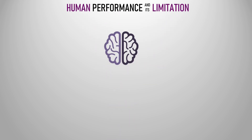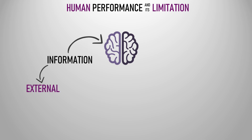We start by receiving information, and there are two reception channels: the external one, with which we use our senses such as smelling, listening and others, and the internal one, like when you are feeling hungry. And what do we do with all of this information?